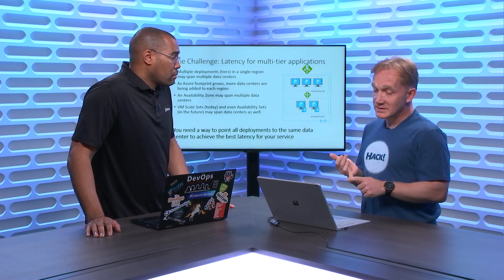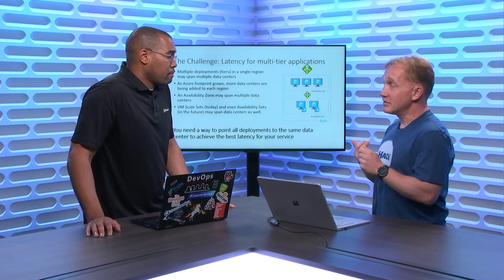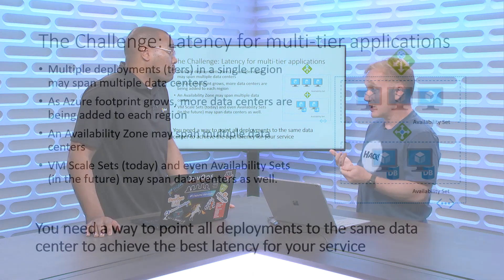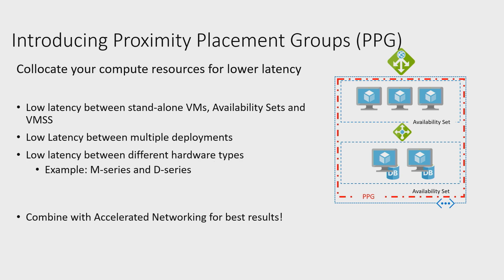It's not that easy because multiple deployments in a single region may span multiple data centers. Even availability zones actually may span multiple data centers. Even scale sets, and in the future availability sets, may span multiple data centers. So what do you do? How do you put them together to get the best latency?